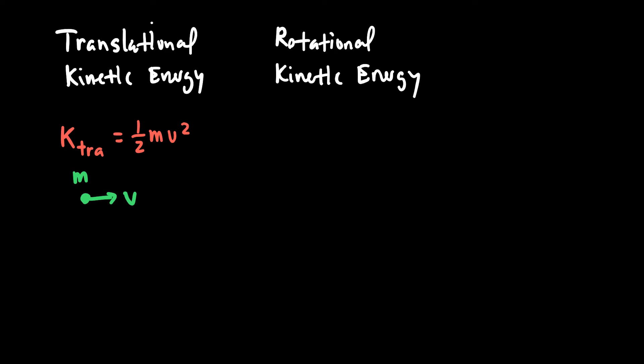Now we want to go through a similar line of thinking to find the equation for rotational kinetic energy, K_ROT. We should expect it still depends on how fast the thing is moving and what the mass of the object is, but how exactly? Let's say we have a single particle on an arm with mass m, moving with a linear speed v, at a distance r away from an axis of rotation.